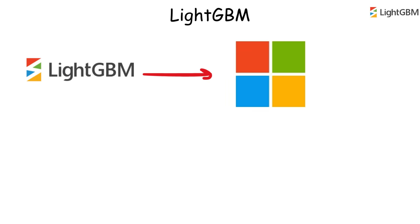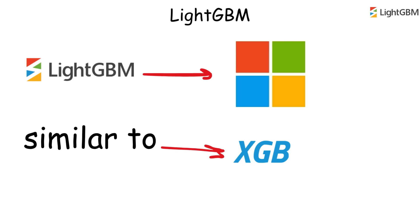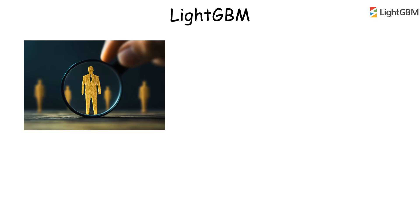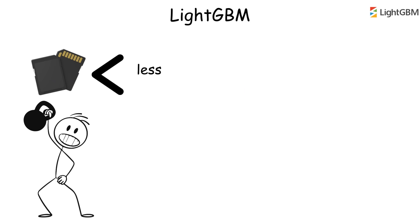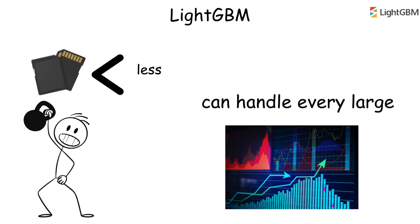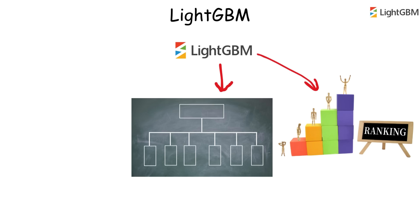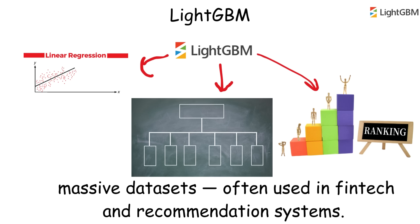LightGBM, developed by Microsoft, is similar to XGBoost but focuses on even faster training using a method called histogram-based decision tree learning. It uses less memory, trains faster, and can handle very large datasets. LightGBM is great for tasks like ranking, classification, and regression in massive datasets, and is often used in fintech and recommendation systems.